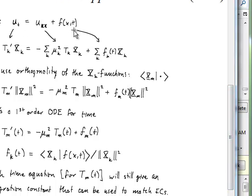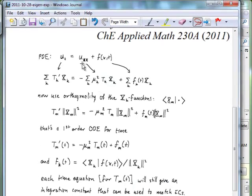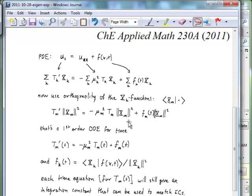When we plug our eigenfunction expansion into the partial differential equation, on the left-hand side we differentiate the time functions, and on the right-hand side we act with the second derivative operator on the eigenfunctions. Since time is just a constant in this operator, when you take the k-th eigenfunction and act on it with the Sturm-Liouville operator — in this case just the second derivative operator — out pops the eigenvalue, which is minus mu_k squared, or minus n_k pi squared. We write our expansion on the right-hand side as well so that we get everything in terms of the eigenvector basis. Now we use the orthogonality of these eigenfunctions to get an equation for those time-dependent coefficients.